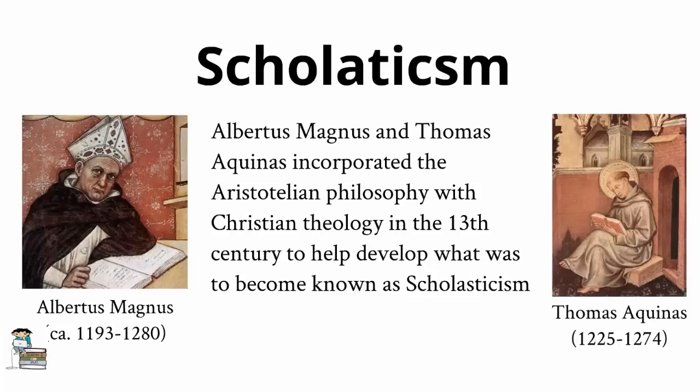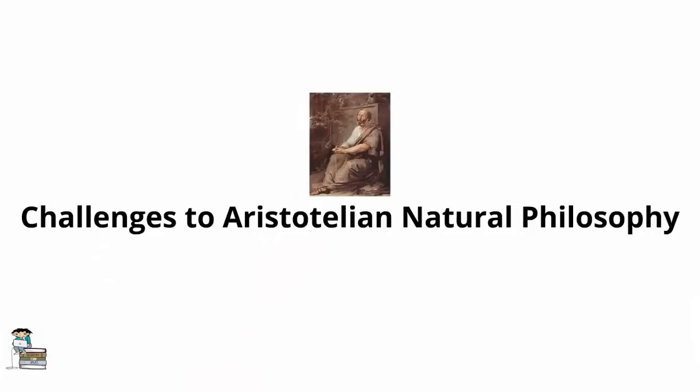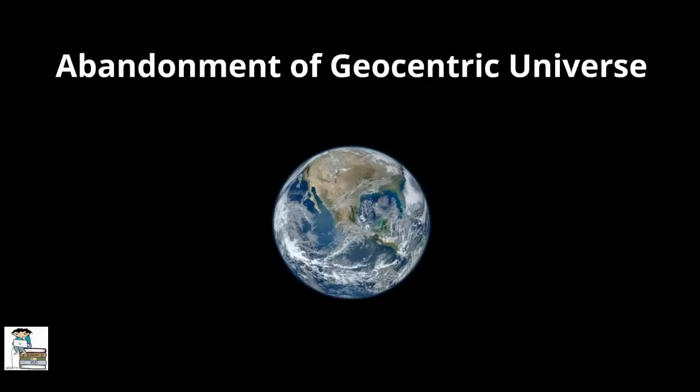The Aristotelian system was extremely comprehensive which was one reason for its endurance. However, many elements of it were challenged during the scientific revolution. A good example of one aspect which faced many challenges was Aristotle's view of the cosmos. His view of the cosmos was to face strong challenges by astronomers such as Copernicus, Kepler, Galileo, and Newton in the 16th and 17th centuries. The works of these men finally secured the abandonment of the geocentric or earth-centered universe, a view Aristotle favored, and the adoption of a heliocentric or sun-centered universe.